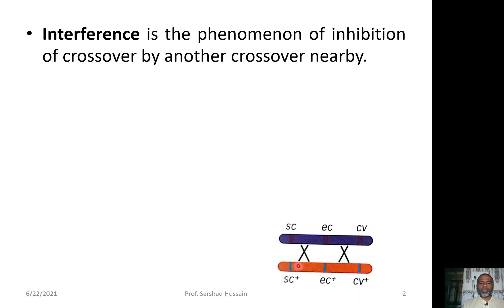Consider a homologous pair of chromosomes having two distinct regions: SC-EC and EC-CV. If the crossing over between the SC and EC region interferes, it will not allow 100% chance of crossing over to take place between EC and CV. It will lessen the chance of crossing over between EC and CV to some extent, or sometimes it may totally inhibit the chances of crossing over between EC and CV. So one crossing over is interfering with the chances of crossing over at the other region of the homologous chromosome.